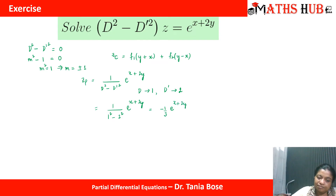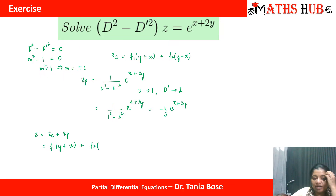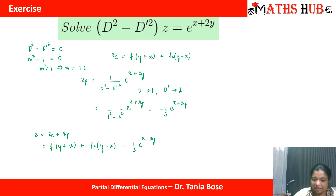The complete solution is z = z_c + z_p. So z = f₁(y + x) + f₂(y − x) − (1/3)e^(x+2y).